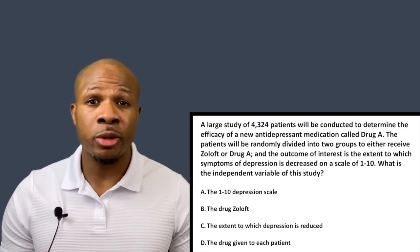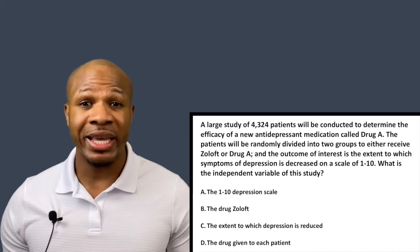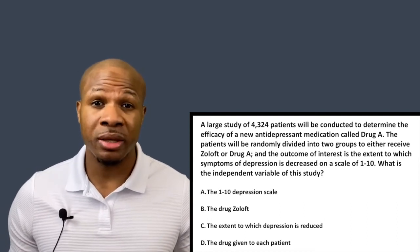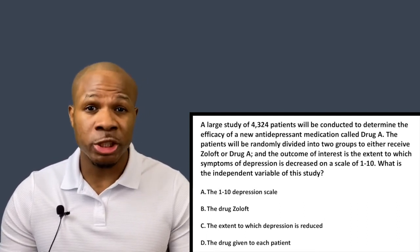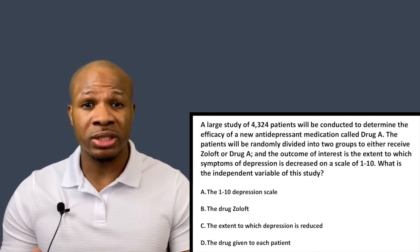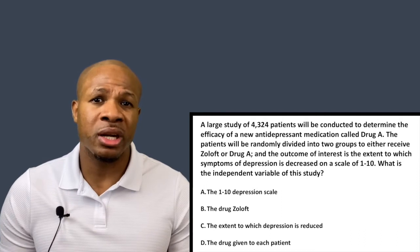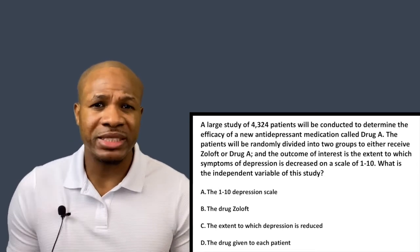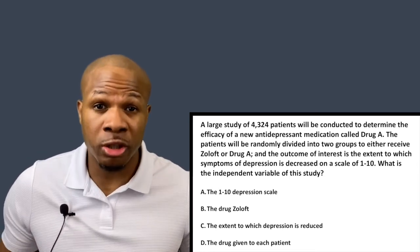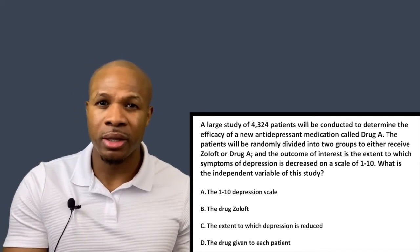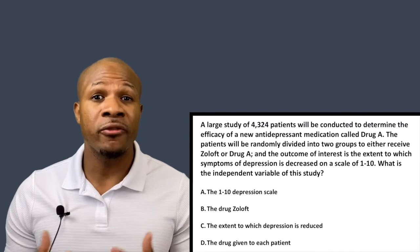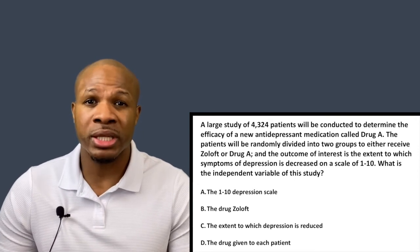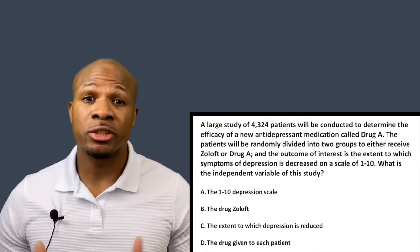Let's look at the answer choices. Answer choice A says the one-to-ten depression scale — is that an input? No. The one-to-ten depression scale is a tool we use to measure our output, which is the extent to which depression is decreased. That's not a variable, so A is incorrect. Answer choice B says the drug Zoloft — first of all, is that even a variable? Zoloft cannot turn into a different drug, which means it's not a variable, it's a constant.